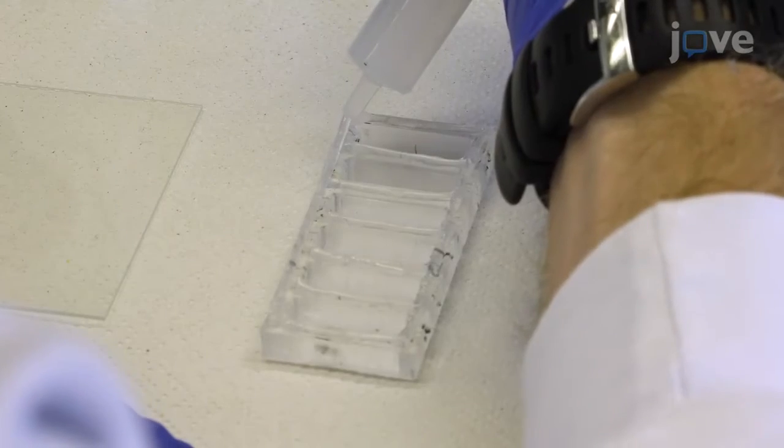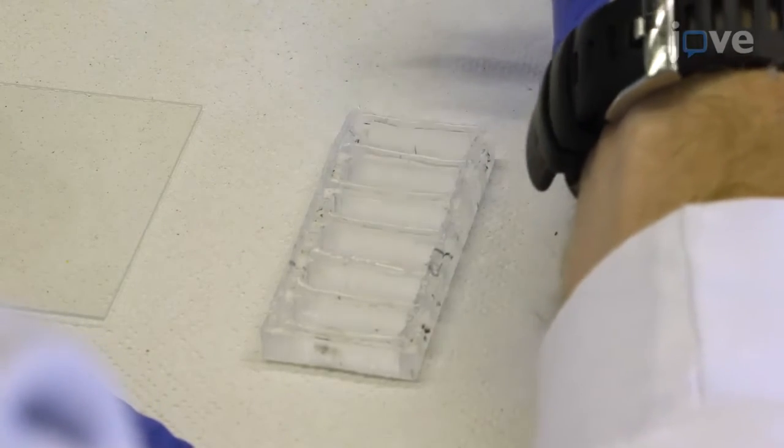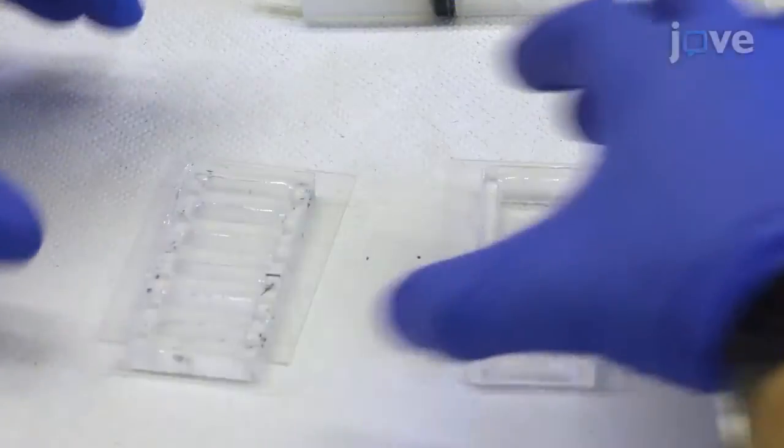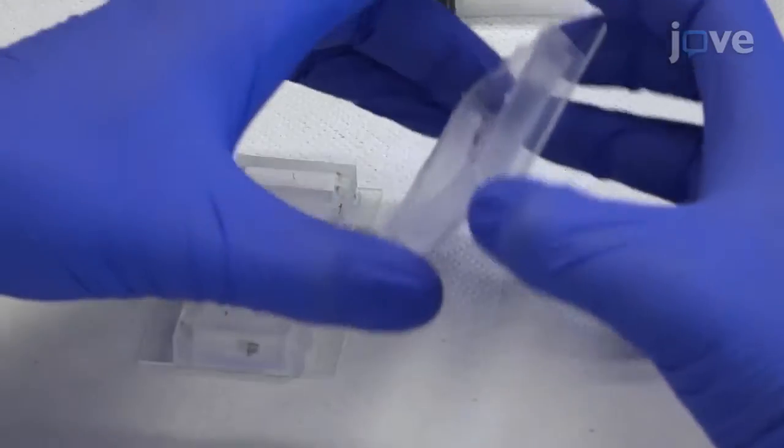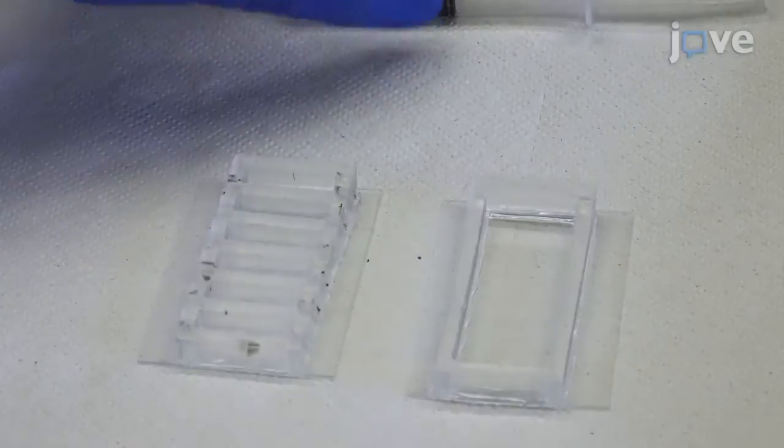Attach the PDMS device and the device cover onto a cover glass of 75 by 50 millimeter micro slides using non-toxic silicon adhesive and leave the parts to set overnight. Apply the glue to the smooth side of the device.